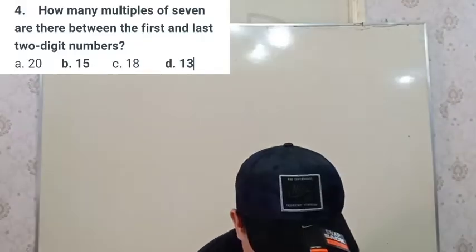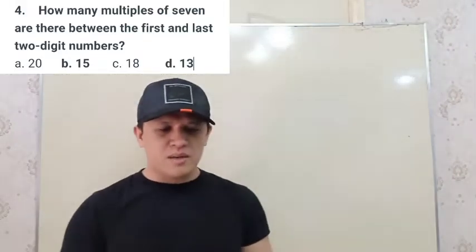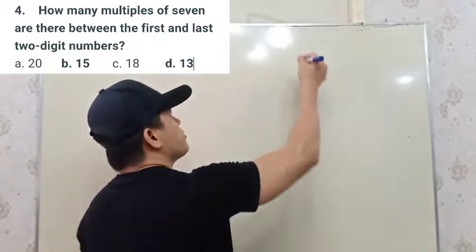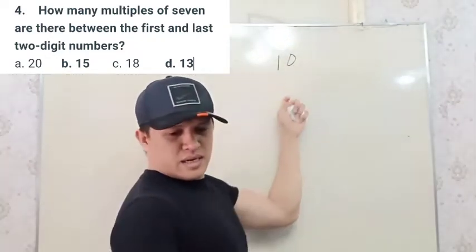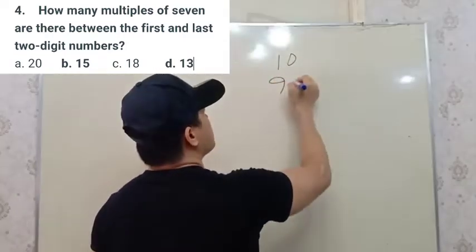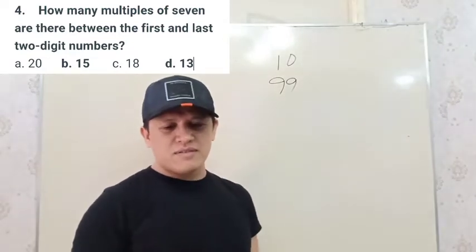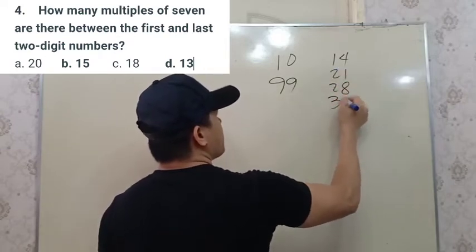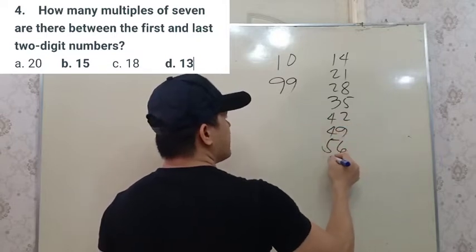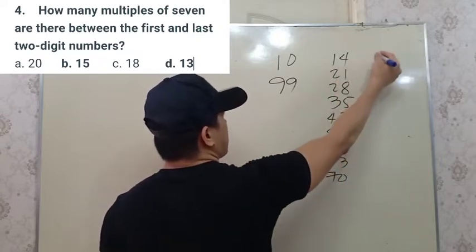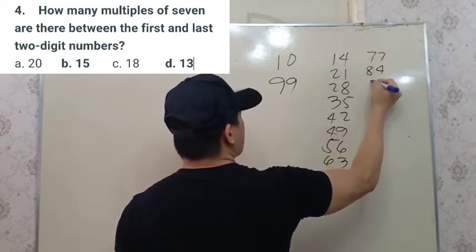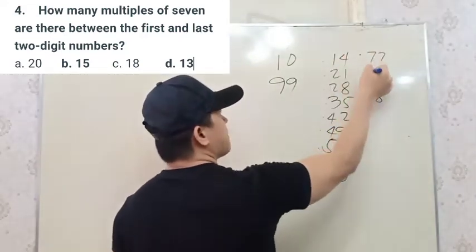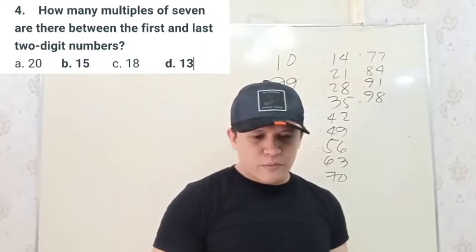Number four: how many multiples of seven are there between the first and last two-digit numbers? The first two-digit number is 10 and the last is 99. Counting the multiples of 7: 14, 21, 28, 35, 42, 49, 56, 63, 70, 77, 84, 91, 98. Counting them up gives 13. There are 13 multiples of seven between 10 and 99.